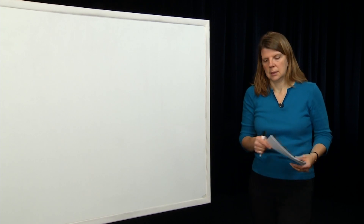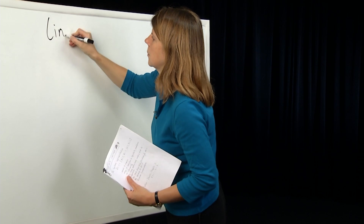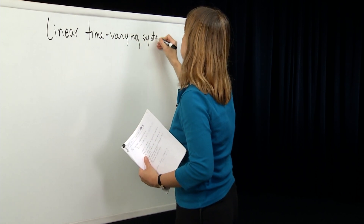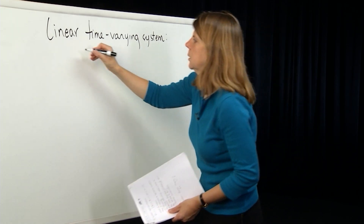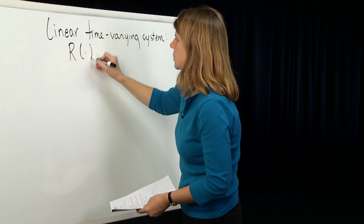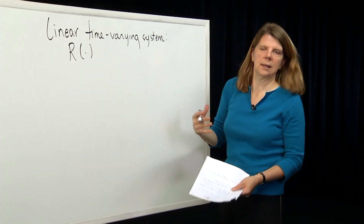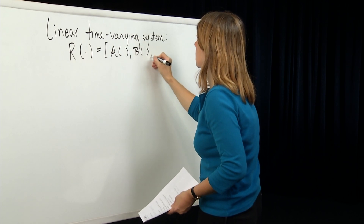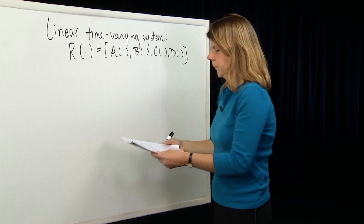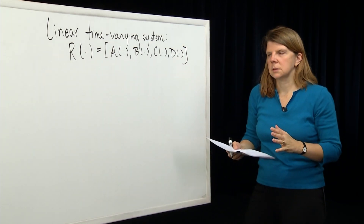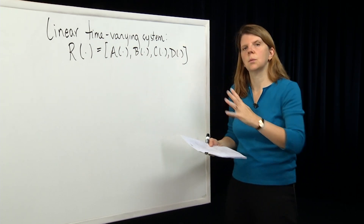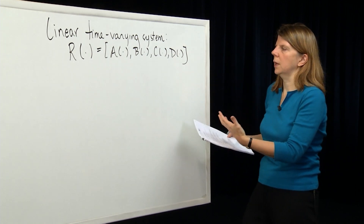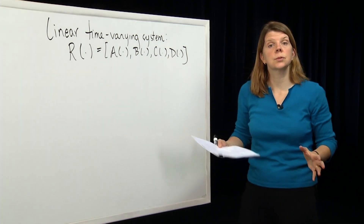We typically define a linear time-varying system in terms of a matrix notation. We use R, where R is the system representation, as a function of time indicating it's time-varying. We define it in terms of four matrices: A, B, C, and D. In this module, we're going to talk about what this means, why the model satisfies a Lipschitz condition, its linearity, and set up the framework for thinking about solutions to that differential equation, which we'll treat in the next module.